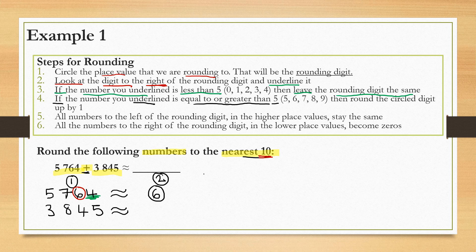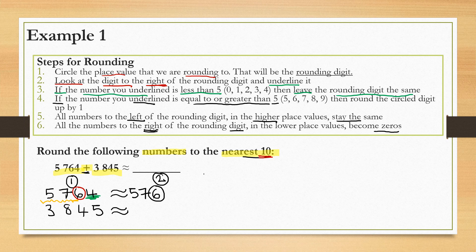Since 4 is less than 5, step 4 doesn't apply. In step 5, all the numbers to the left of the rounding digit or in the higher place values stay the same. So the 5 and the 7 stay the same because they are to the left of the 6. And then the numbers to the right of the rounding digit become 0. Therefore, 5,764 is approximately equal to 5,760 when rounded to the nearest 10.